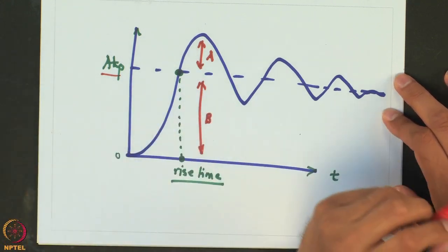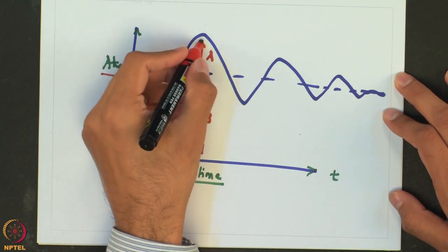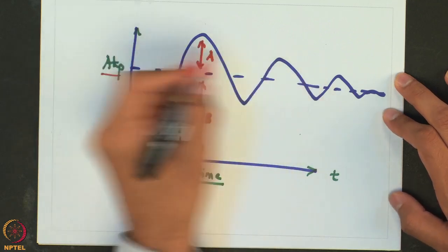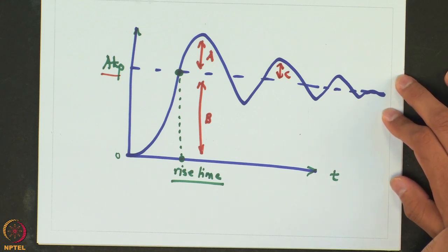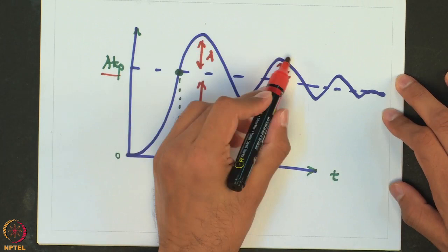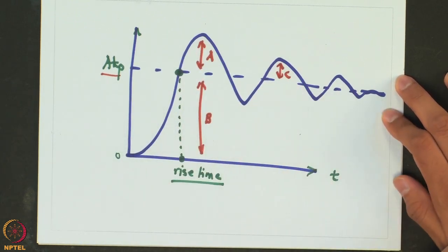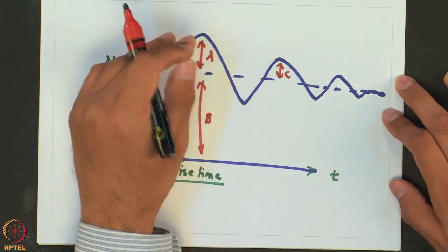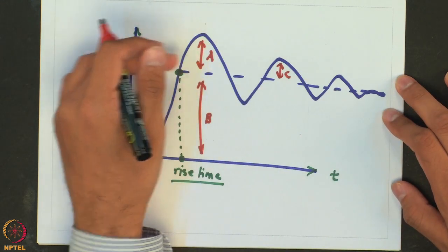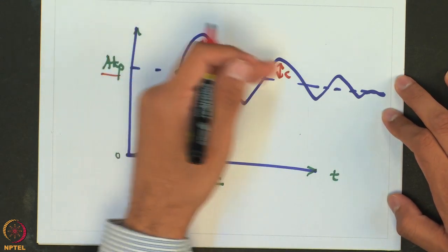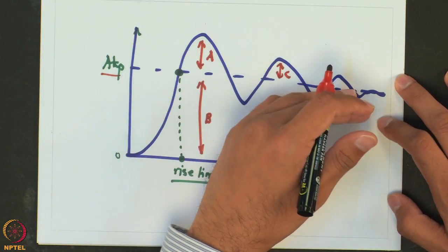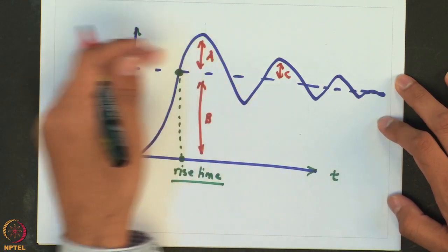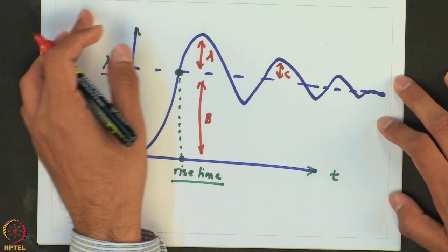The third term is the decay ratio. It tells us how quickly the oscillations are decaying. If we take the second peak above the ultimate value as C, the decay ratio is defined as C over A. From a controller perspective, we want a low decay ratio so that the oscillations decay very fast and the response ultimately reaches and stays at the ultimate value.